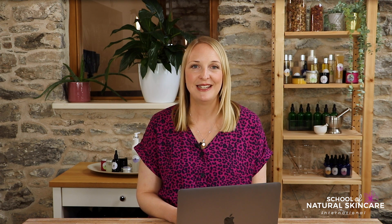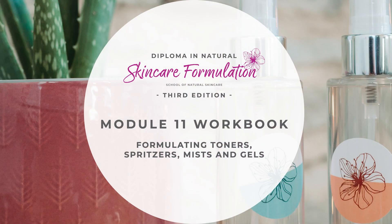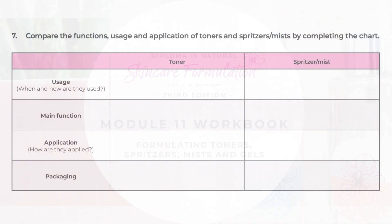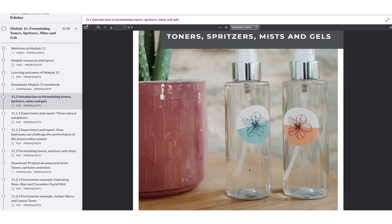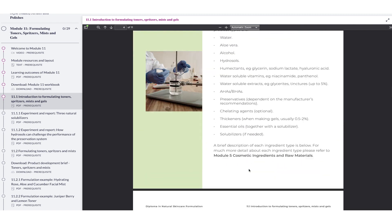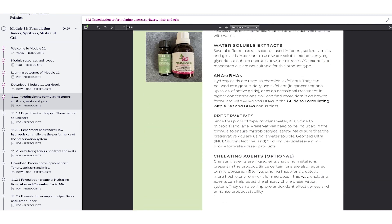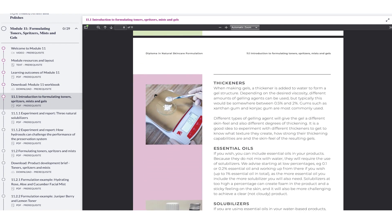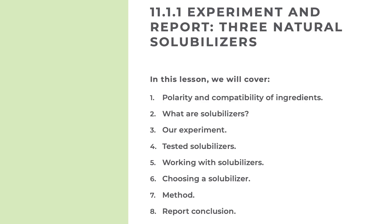Even if you've marked something complete you can go back and revisit it as many times as you wish. We provide a module workbook for each module containing questions for you to complete as you work through it, to make sure you've picked up the key points. You can type directly into them or print them and complete them by hand. For every lesson in the course you'll receive a beautiful and very comprehensive PDF lesson. We have carried out lots of experiments and we share with you all the results. For example, here is an experiment on natural solubilisers and how effective they are at solubilising essential oils. Here is an experiment on how hydrosols can challenge your preservation system.